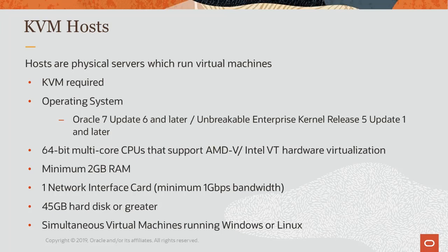Some of the system requirements for hosts include Oracle Linux 7 Update 6 and later, Unbreakable Enterprise Kernel Release 5 Update 1 or later, a 64-bit multi-core CPU with AMD-V or Intel VT hardware virtualization, at least 2GB of RAM, one network interface card with bandwidth of at least 1GB, and 45GB of storage on a local writable hard disk. Multiple virtual machines running either Windows or Linux operating systems can be run simultaneously on the host using KVM.